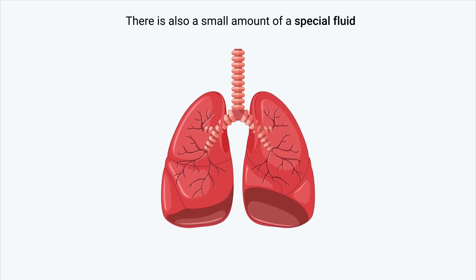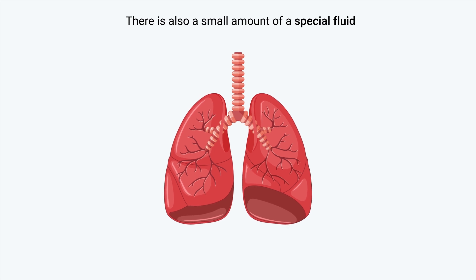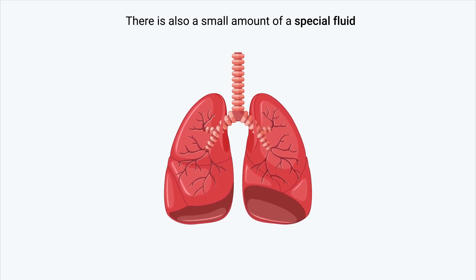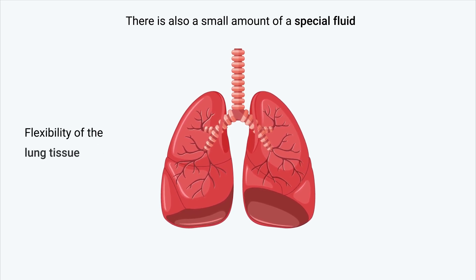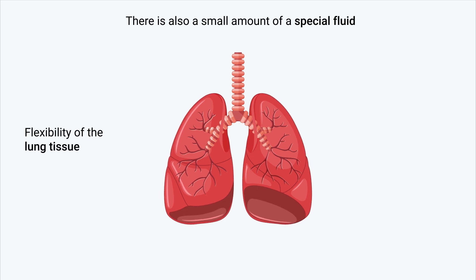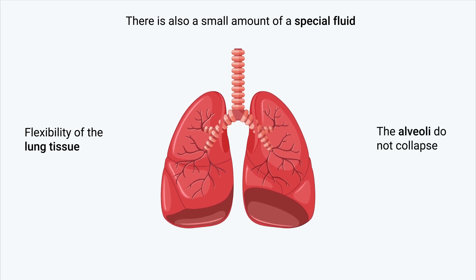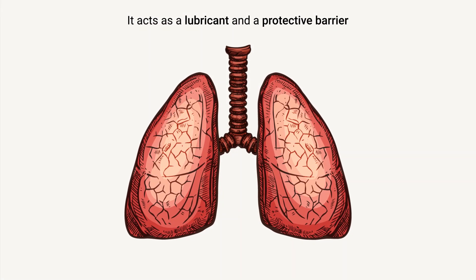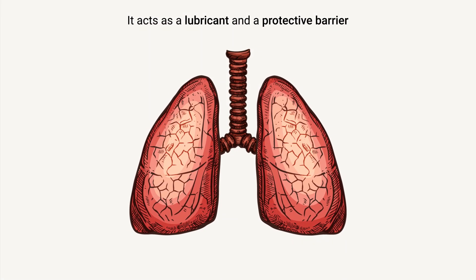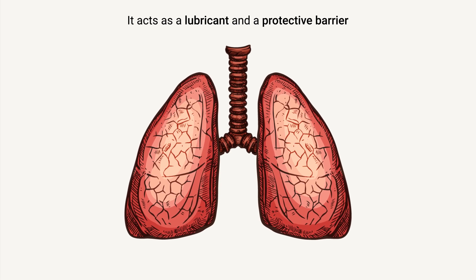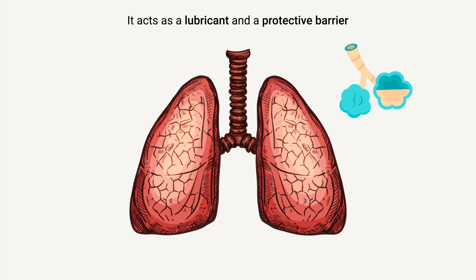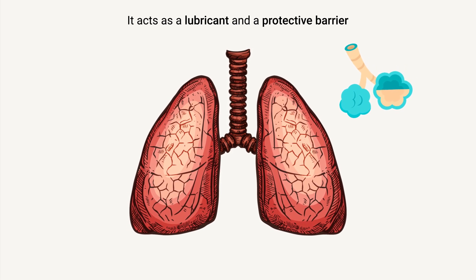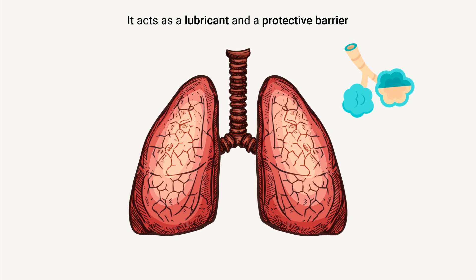There is also a small amount of special fluid within the lung tissue. This fluid plays a crucial role in maintaining the flexibility of the lung tissue and ensuring that the alveoli do not collapse. It acts as a lubricant and a protective barrier, preserving the delicate structure of the alveoli and facilitating their function in gas exchange.